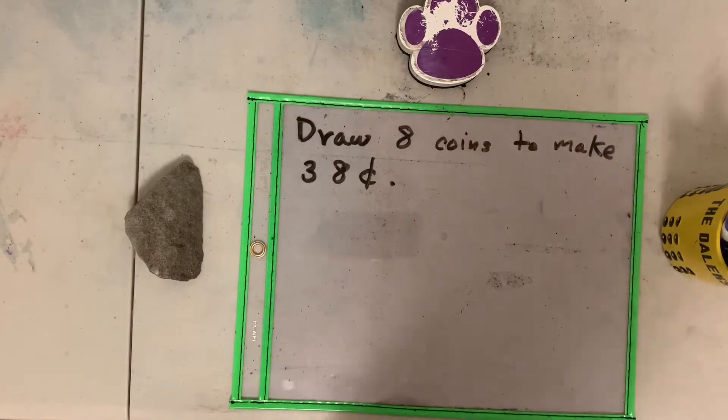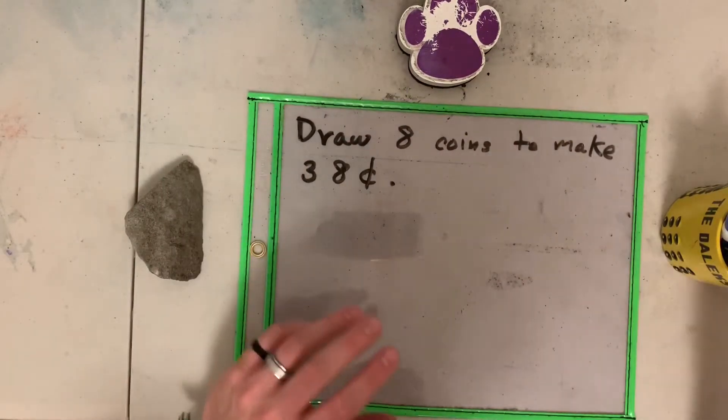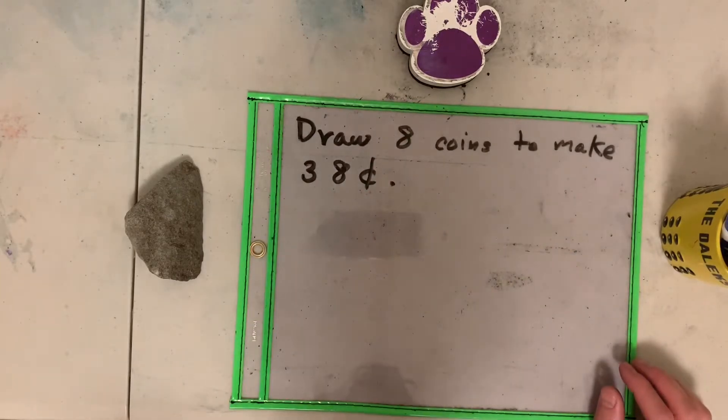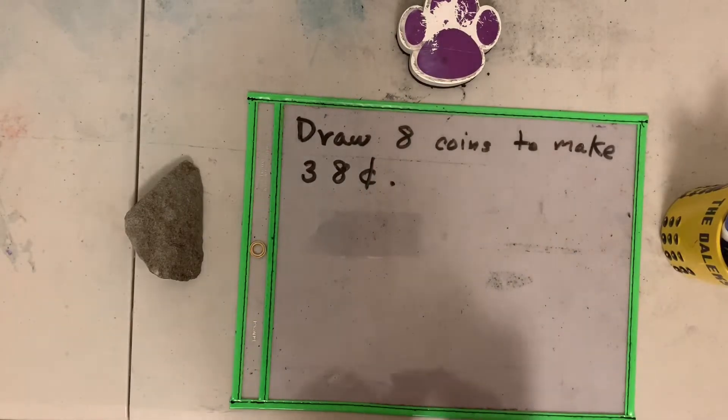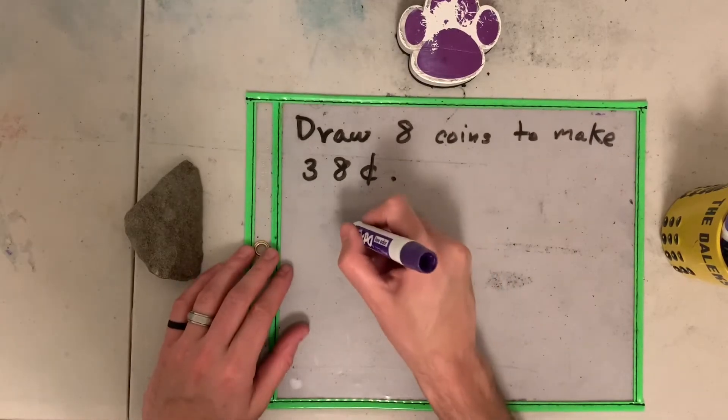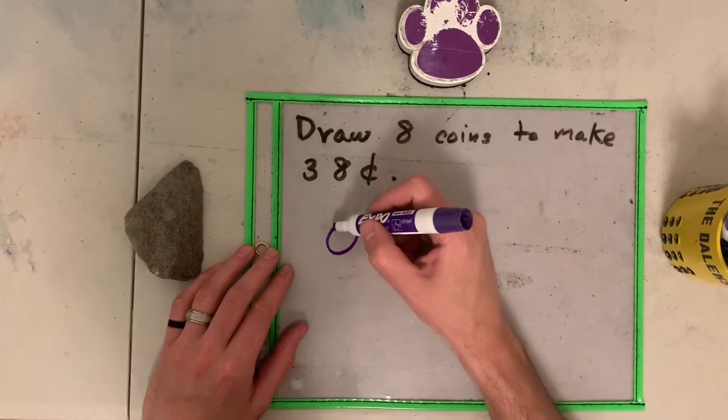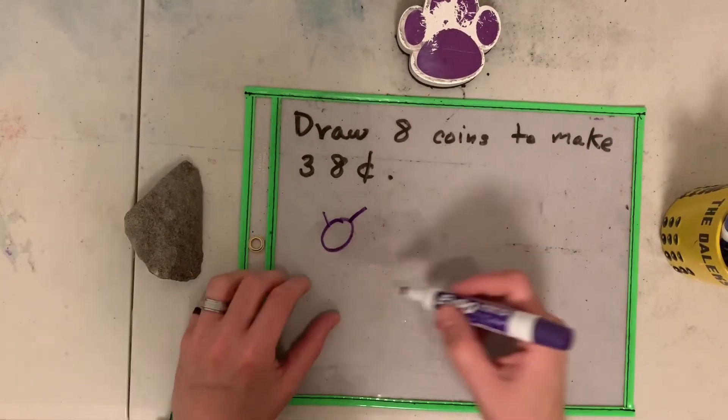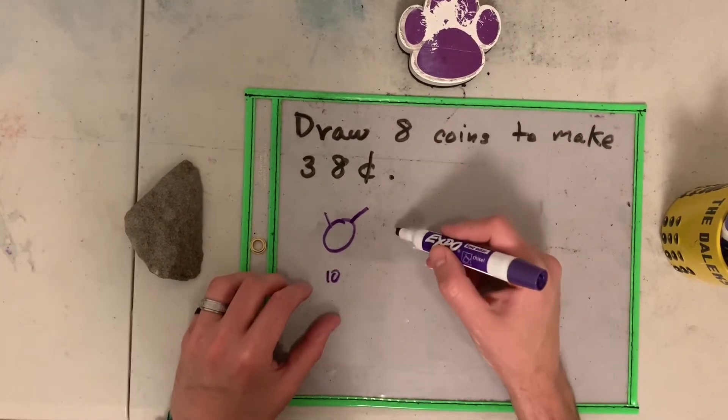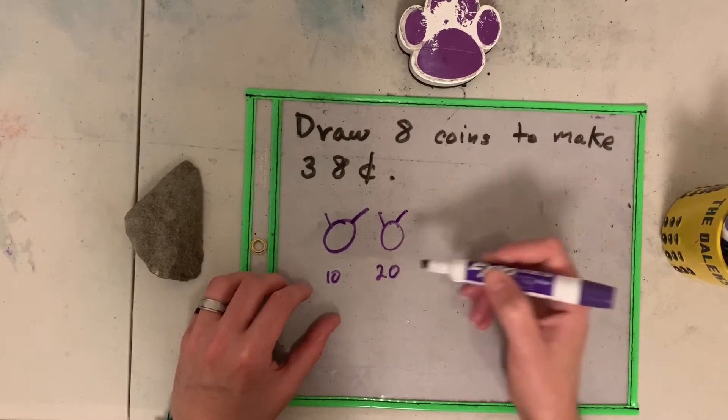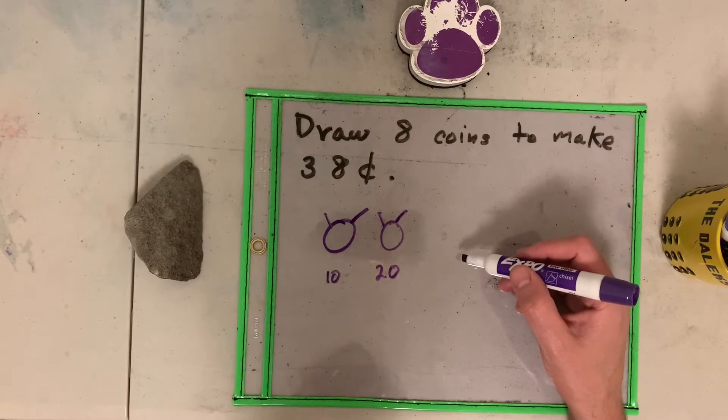Right now, we're going to practice the one that we did yesterday. Yesterday, you had to draw eight coins to make thirty-eight cents. If we draw the coins, let's see how it goes. First, I have one dime. And then one dime makes one, two hairs equals ten cents. Then I have another dime. One, two, this equals twenty cents.